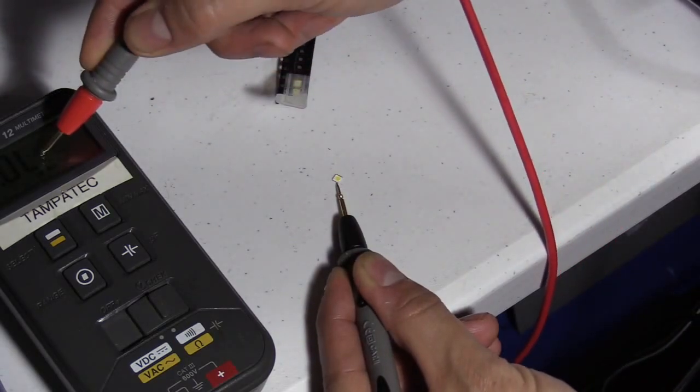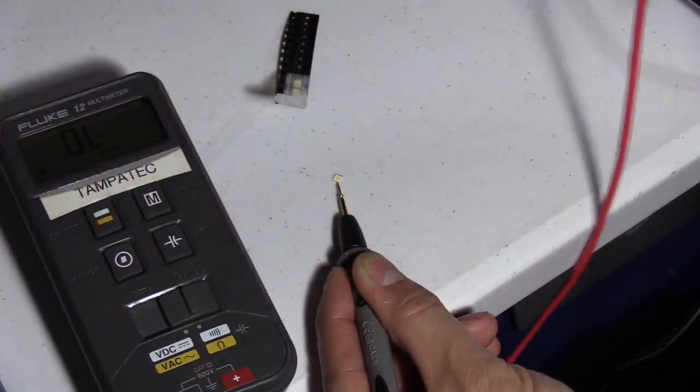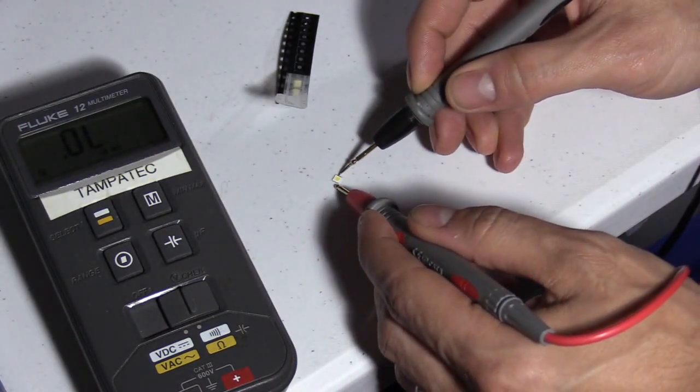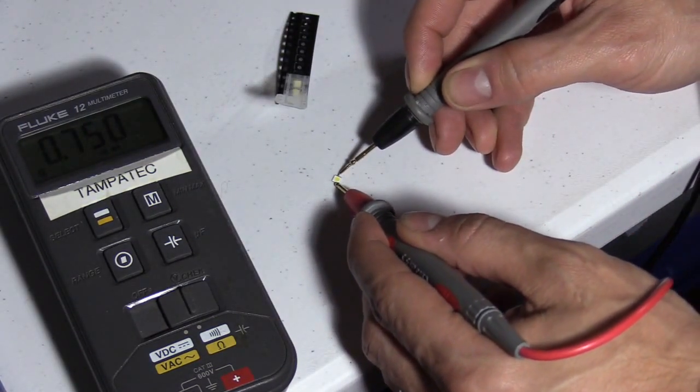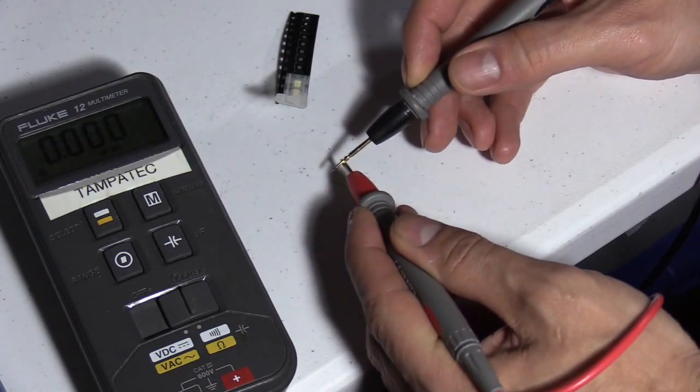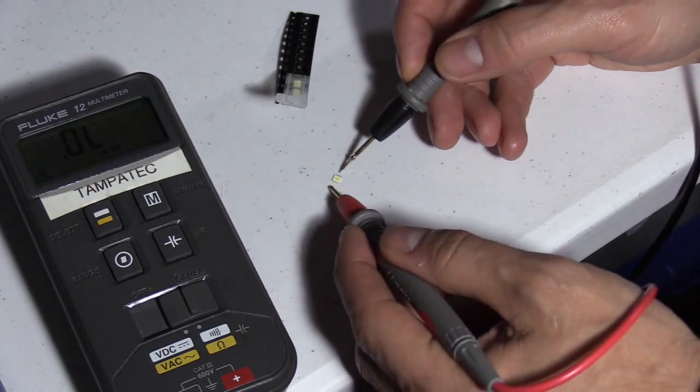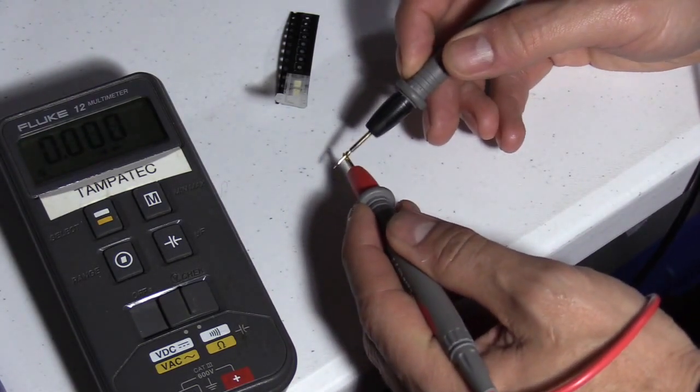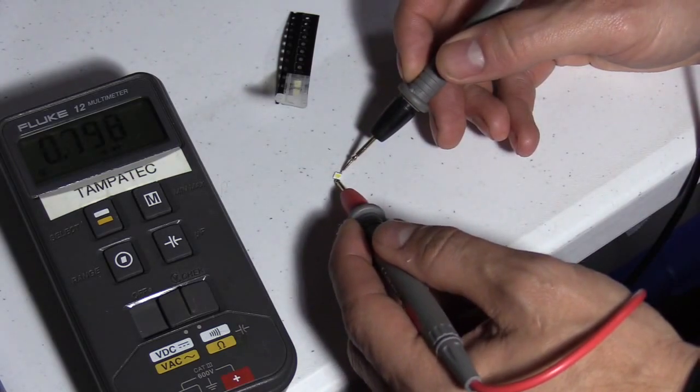Now it just says OL on the screen. If you reverse the leads, it'll say .7 usually. You shouldn't hear that. That's a short signal. If you touch it like that and you hear that noise, that means the LED is shorted.